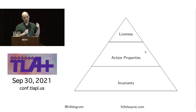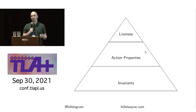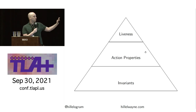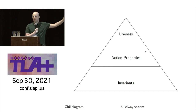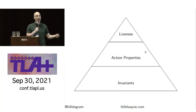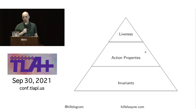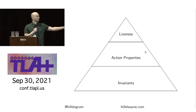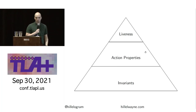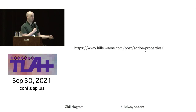In general, most real-world specs have lots of invariants, then fewer action properties, then a few liveness properties. Leslie Lamport says invariants are more important than liveness properties, and similarly, action properties are more common than liveness properties. That said, you are more likely to have at least one liveness property than at least one action property, but if you have both, you'll likely have more action properties than liveness properties. That's actually one reason I cover liveness instead of action properties in workshops. There's a lot more to say about action properties — I have a post at hillowayne.com/post/action-properties.